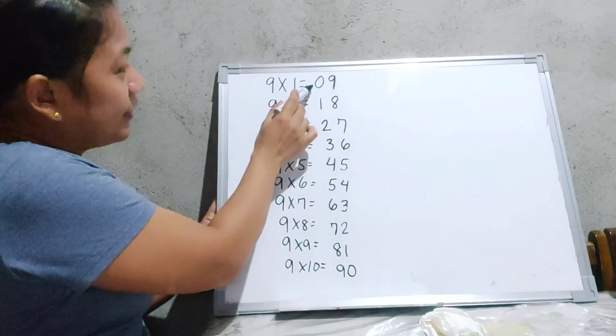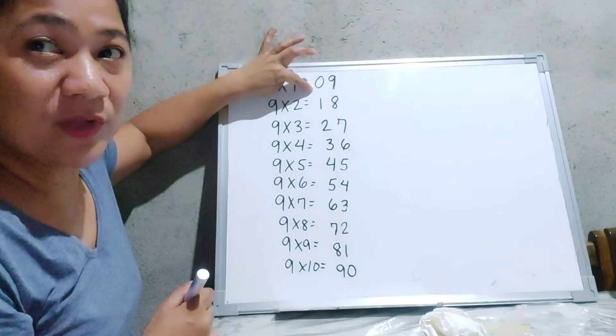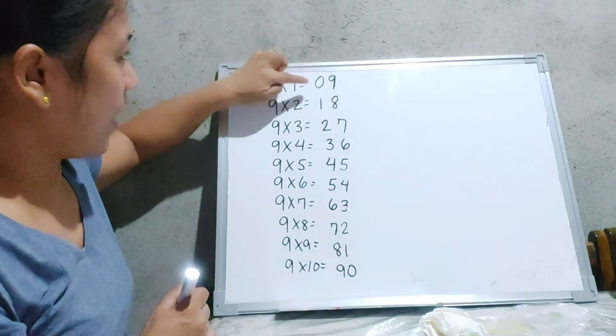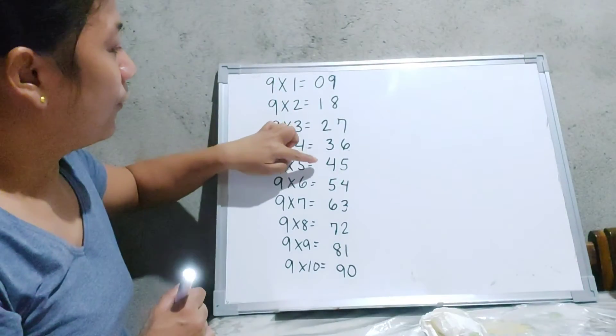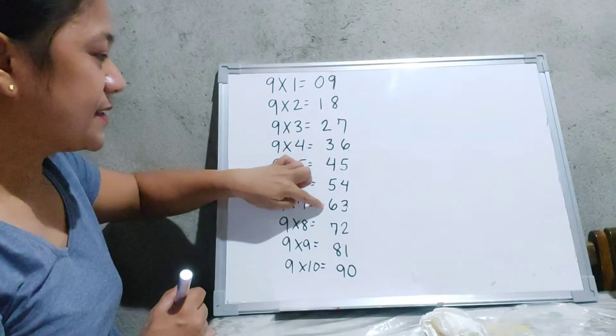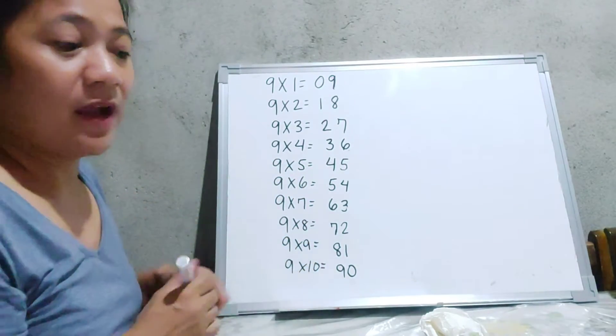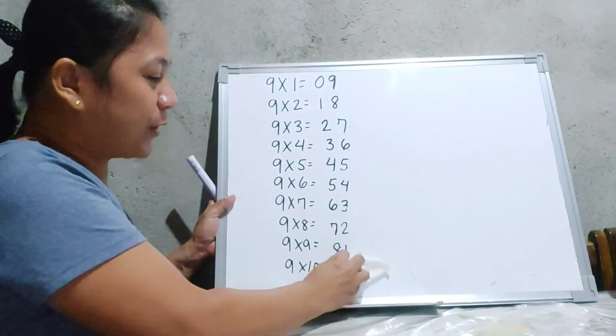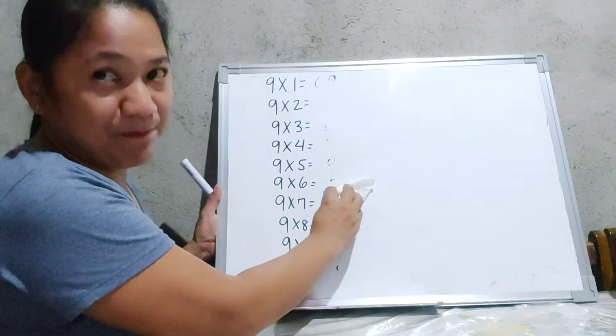So we have 0, 1, 2, 3, 4, 5, 6, 7, 8, and 9. So I'm going to erase this product and let us apply the tricks that I mentioned.